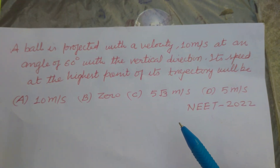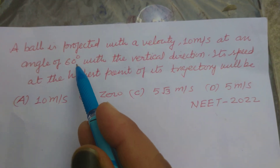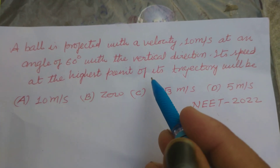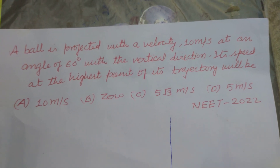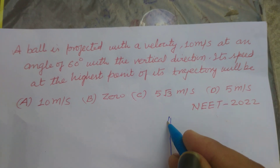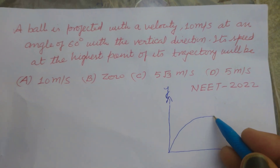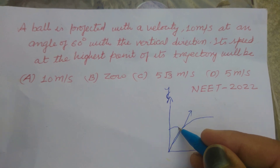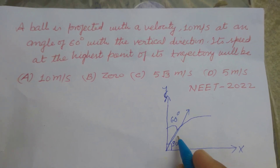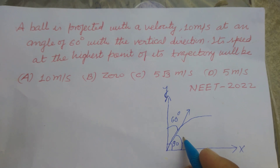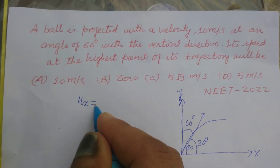Hello students. This is a NEET 2022 question: a ball is projected with a velocity of 10 meters per second at an angle of 60 degrees with the vertical direction. We set up coordinate axes where x is the horizontal direction and y represents the vertical direction. The particle is projected at 60° with the vertical, and since the angle with horizontal is 90° − 60° = 30°, the effective angle theta is 30 degrees.